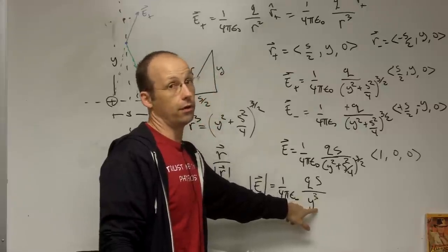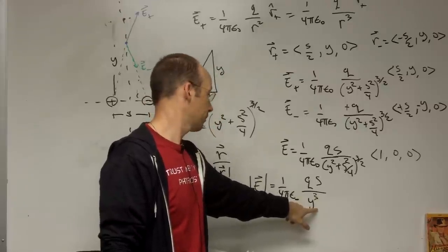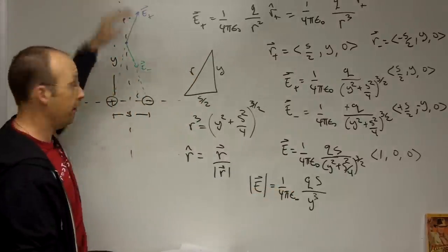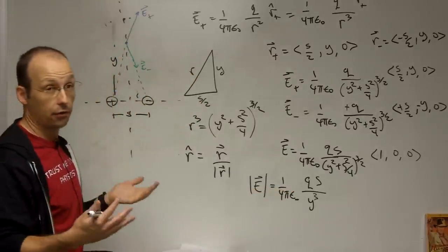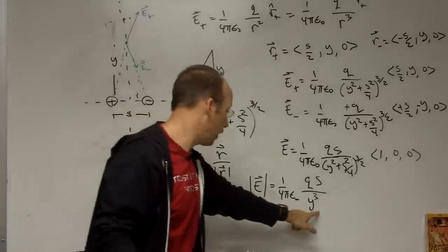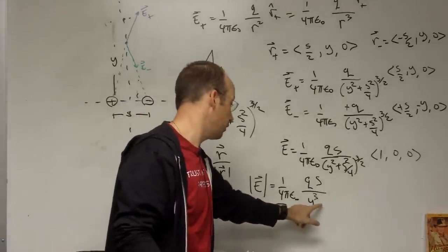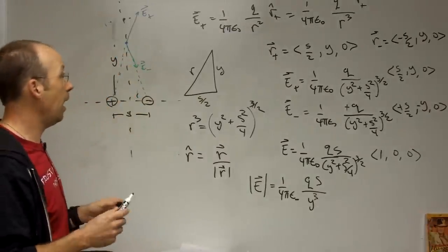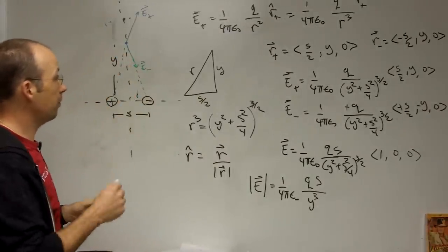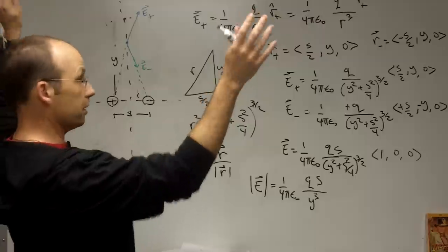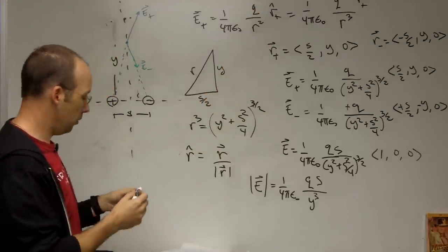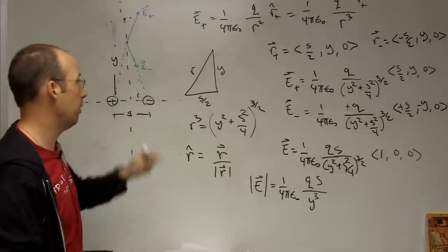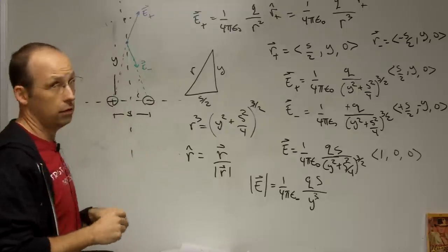We should check two things. First, units: we have one over four pi epsilon naught, and a charge times a distance divided by distance cubed, which gives distance over distance cubed, or one over distance squared — matching the point-charge field. Second, the limiting behavior: as y goes to infinity, E goes to zero, as expected. If vectors are causing trouble, that is what you need to work on.